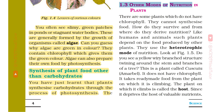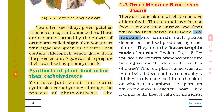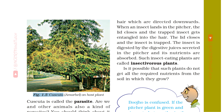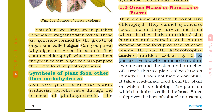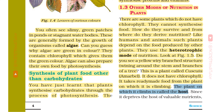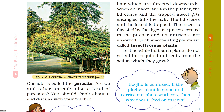There are some plants which do not have chlorophyll and cannot synthesize food. Like humans and animals, such plants depend on the food produced by other plants. They use the heterotrophic mode of nutrition. Cuscuta (Amarbel) is a plant that does not have chlorophyll. It takes ready-made food from the plant on which it is climbing. The plant on which it climbs is called the host. Since it deprives the host of valuable nutrients, Cuscuta is called a parasite. Are we and other animals also a kind of parasites? Think about it and discuss with your teacher.